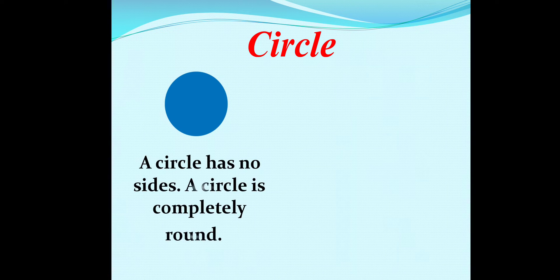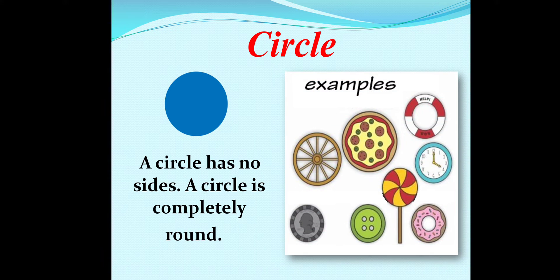Let's first discuss about circle. This shape is called a circle. A circle has no side. A circle is complete round. Here are some examples of circle like wheel, round pizza, candy, button, stamp, donut, round clock, swimming tube.